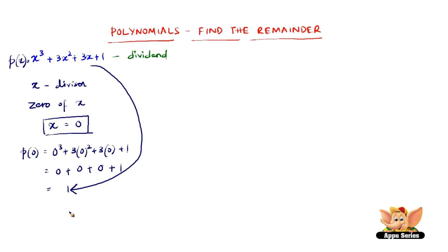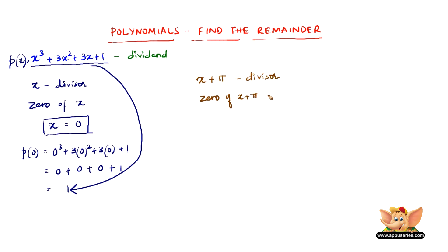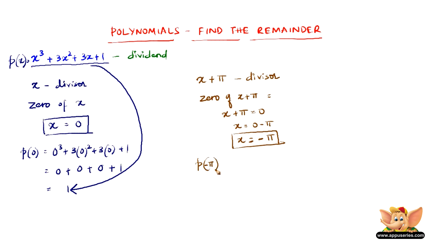Now let us see what happens when the same polynomial x cube plus 3x square plus 3x plus 1 is divided by x plus pi. So x plus pi is the divisor. All we have to do is find the zero: we equate x plus pi to 0, so x equals minus pi. Then p of x is x cube plus 3x square plus 3x plus 1, and p of minus pi equals minus pi the whole cube plus 3 into minus pi the whole square plus 3 into minus pi plus 1.